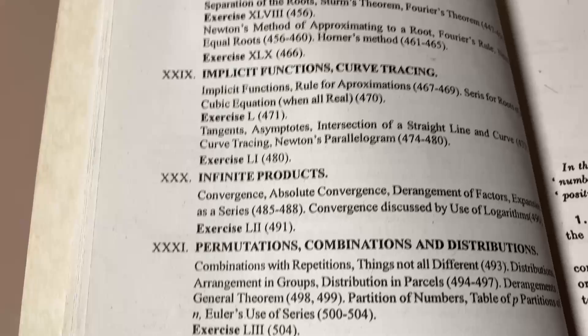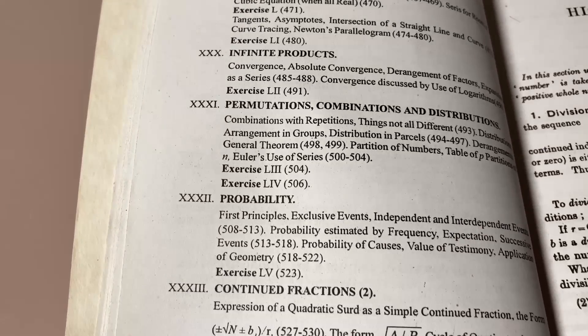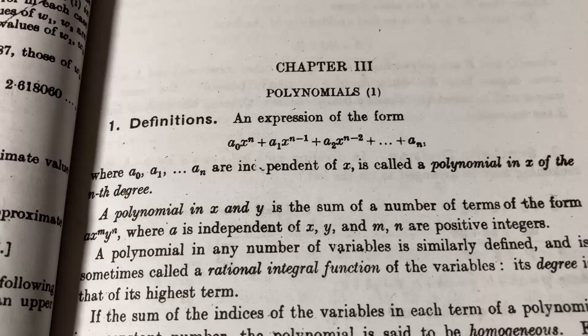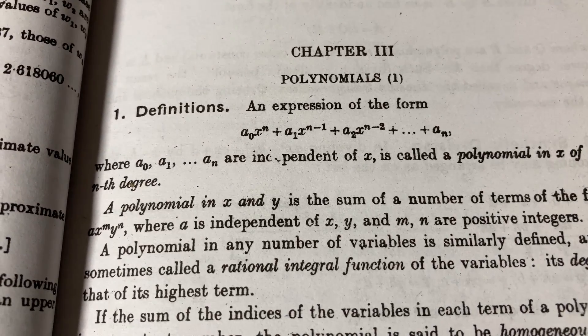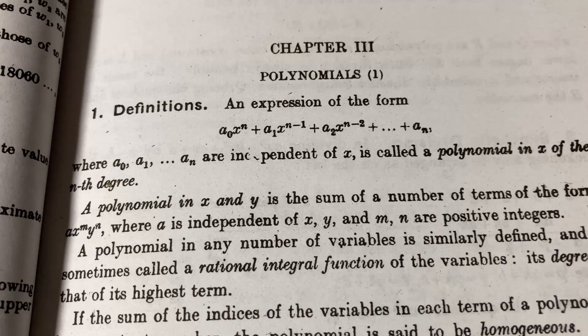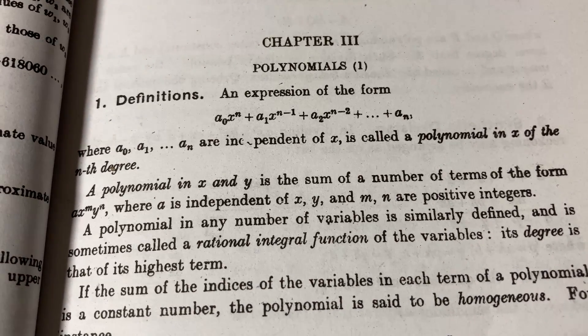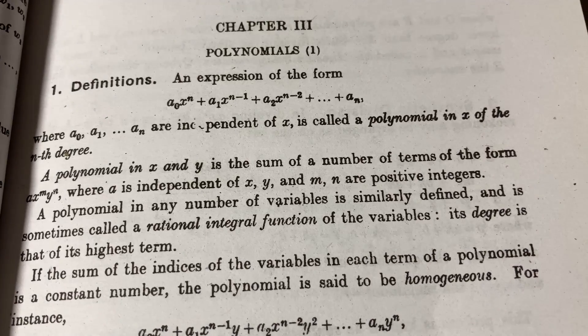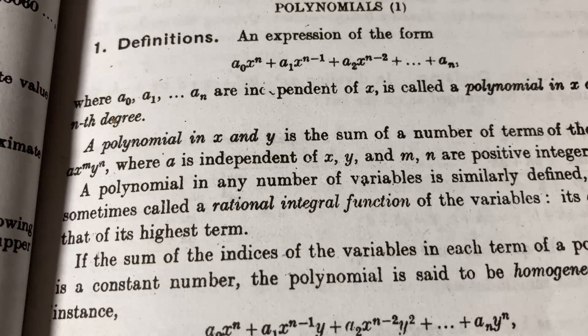And here is the rest of the contents. So quite a bit. This book really gets to the point. Let's take a look at chapter 3, polynomials, definitions. An expression of the form where a sub 0 through a sub n are independent of x, is called a polynomial in x of the nth degree.